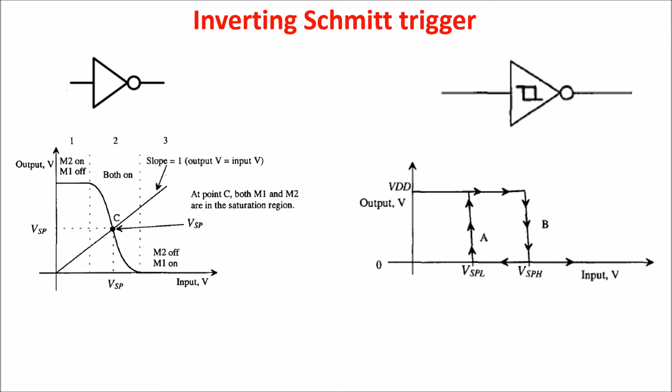We start by showing on the left the classic inverter symbol and the inverter transfer curve. In the inverter we have three regions. In the first and the third regions we have one transistor off and one on, but in the second region we have both transistors on, and in the middle of this region we have the switching point VSP, which is the input voltage above or below which the output changes its state.